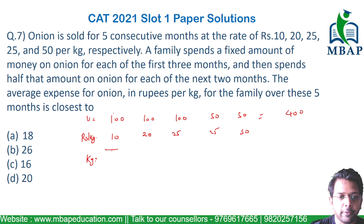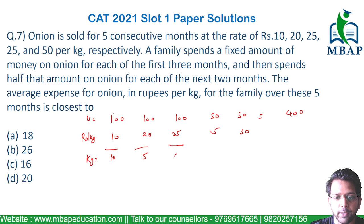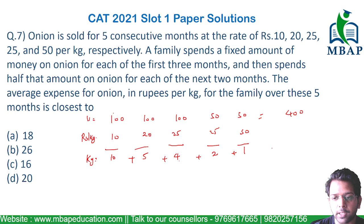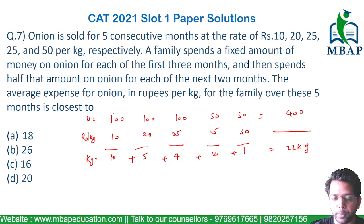In the first month: 100/10 = 10 kg. Second month: 100/20 = 5 kg. Third month: 100/25 = 4 kg. Fourth month: 50/25 = 2 kg. Fifth month: 50/50 = 1 kg. The total comes to 10 + 5 + 4 + 2 + 1 = 22 kg of onion purchased.